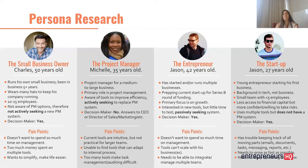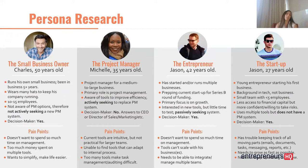Here's an example of a fictional set of personas for a productivity company — a project management system, made up. We have four potential personas with a description of who they might be, some archetype information, and their pain points. The project manager persona, Michelle, might be actively looking to switch from her current project management system, versus the entrepreneur who has something that's sort of working okay and may not be actively switching.